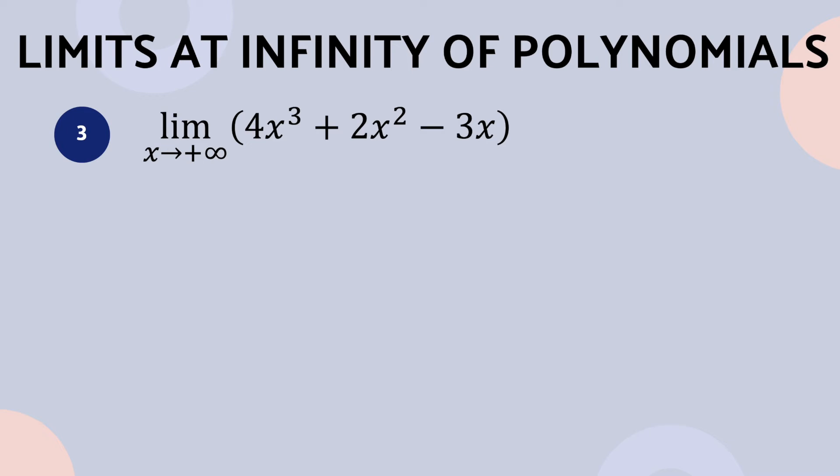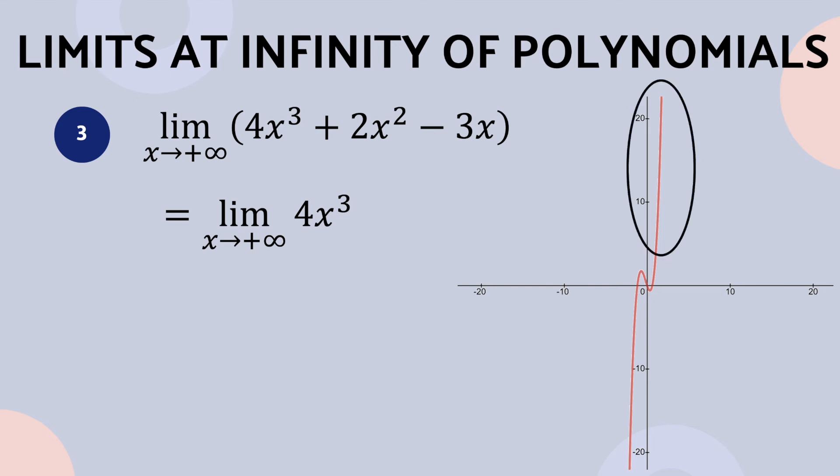Let's find the limit of 4x to the third plus 2x squared minus 3x as x approaches positive infinity. The highest power term of the given function is 4x cubed. According to theorem 1, we can say that the outputs for the expression 4x cubed are increasingly large positive numbers. Therefore, the right-hand limit of the function, as shown also by its graph, is positive infinity.